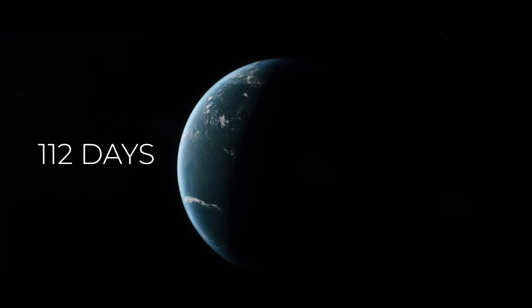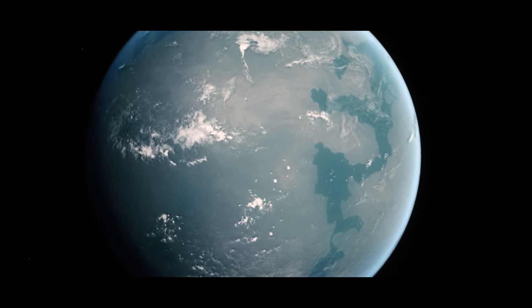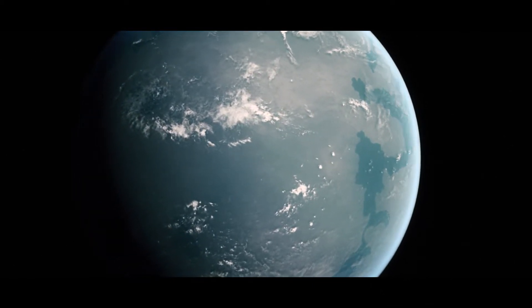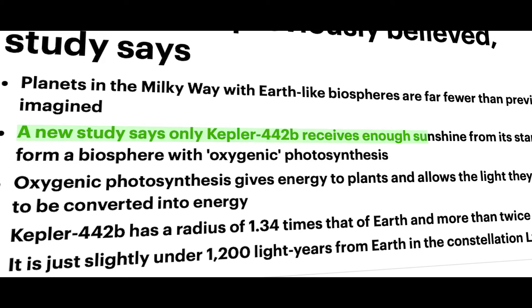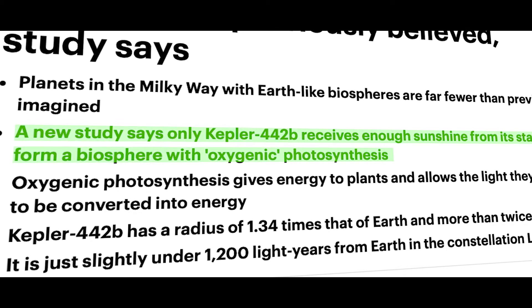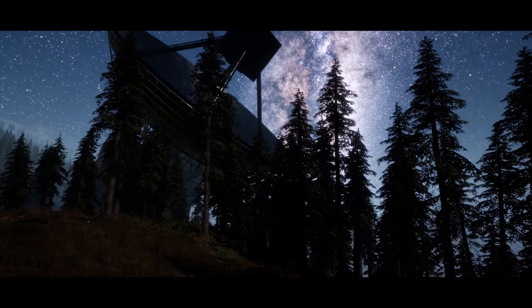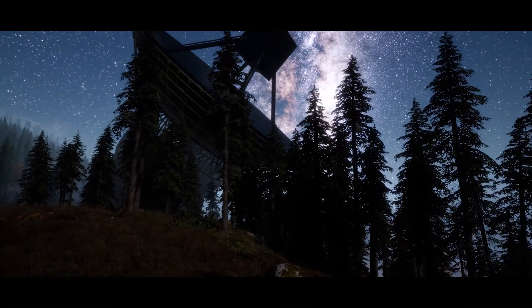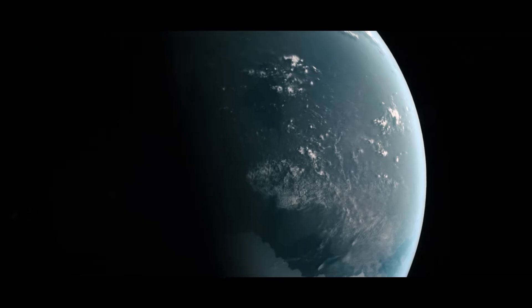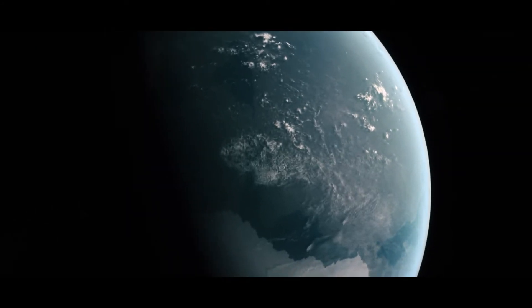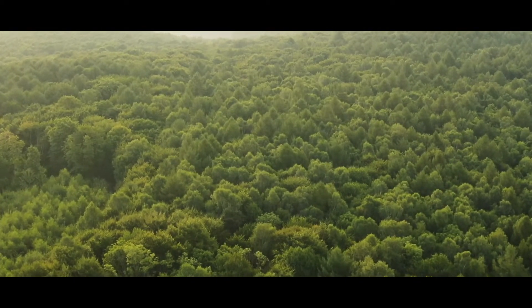Kepler-442 was discovered in 2015. A study done in 2021 discovered that Kepler-442b may receive enough light to sustain a significant biosphere. The researchers analyzed the likelihood of different planets being able to do photosynthesis. It was found that Kepler-442b receives sufficient radiation from its star.